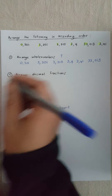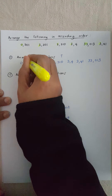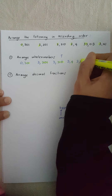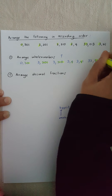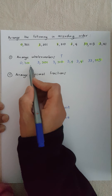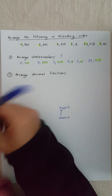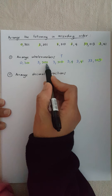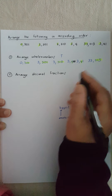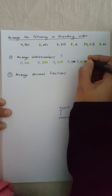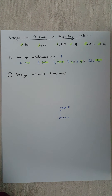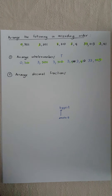Now I must arrange the decimal part of my fraction. I'm looking at 301, 301, 310, there's a 4, there's a 41, and there's a 013. What I want to do — like we did in the first question — is let them all have the same number of decimal places. This one has three, this one has three, this one has three. This one doesn't have three so I'm going to add two zeros to it, and this one has two so I'm going to add one zero. Now they all have three decimal places so I can compare them.